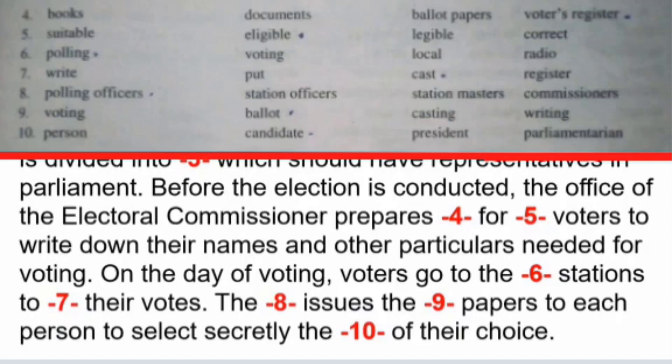The DASH issues — options: A. polling officers, B. station officers, C. station masters, D. station commissioners. The correct answer is A — the polling officers. Issues the DASH papers — options: A. voting papers, B. ballot papers, C. casting papers, D. writing papers. The correct answer is B — issues the ballot papers.